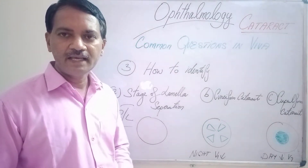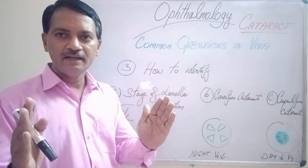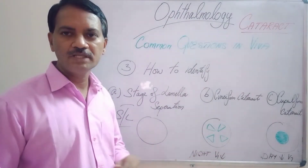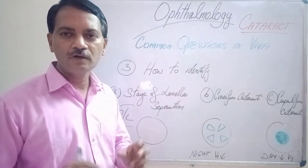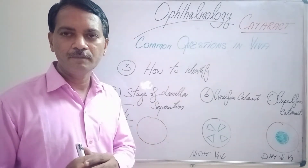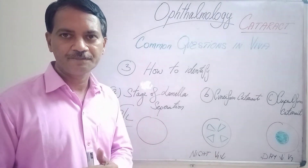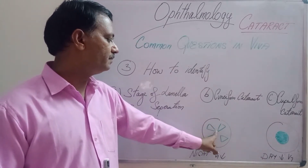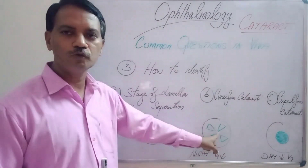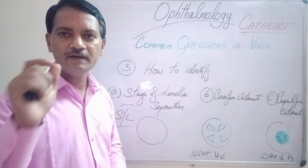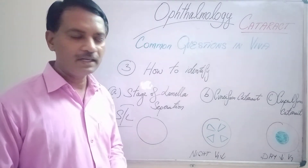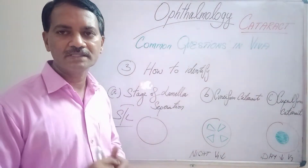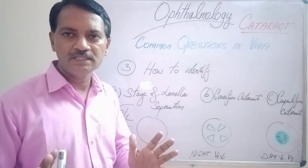In the night time, the pupil will dilate, so the light rays will pass through these opacities, affecting vision by diffraction of light rays. In the day time, the pupil will constrict and be very small, so light will pass only through the center, giving very clear vision. But even in this cataract, glare will be present whenever the person sees a bright light.